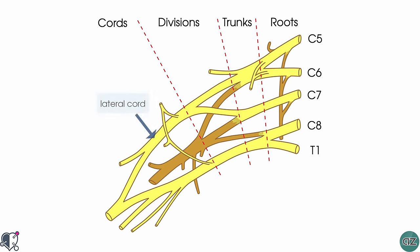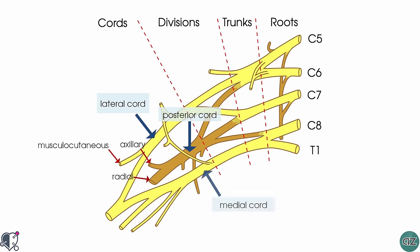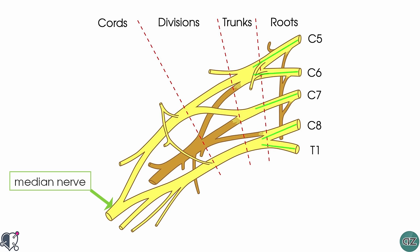Arising from the lateral cord, you have the musculocutaneous nerve. From the posterior cord, you get the axillary nerve and the radial nerve. From the medial cord, you get the ulnar nerve. And where the medial cord joins the lateral cord, you get the median nerve. As you can see from this schematic, if you trace the median nerve backwards, you will see that it contains nerve fibers from all five nerve roots, so the median nerve contains fibers from nerve roots C5 to T1.